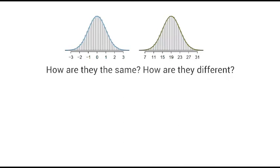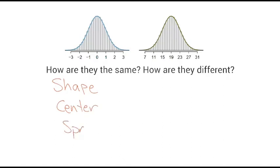I'm seeing good answers. I see 'different numbers, same shape, middle thingy in different spots.' The key terminology we've discussed: when we want to describe something in statistics, we want to describe its shape, its center, and its spread. These are the key things we describe in statistics.